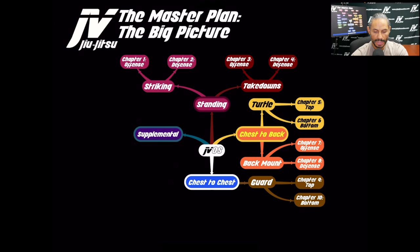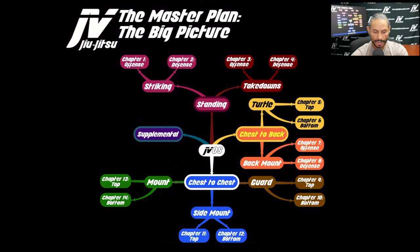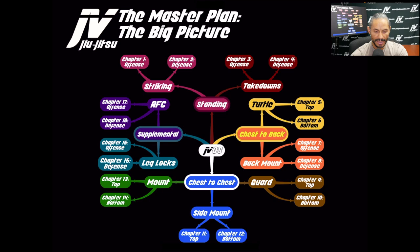The Guard Chapters: Chapter 9 is Guard Top and Chapter 10 is Guard Bottom. Side Mount Chapters: Chapter 11 is Side Mount Top and Chapter 12 is Side Mount Bottom. The Mount Chapters: Chapter 13 is Mount Top and Chapter 14 is Mount Bottom. The Supplemental Chapters: Chapter 15 is Leg Lock Offense, Chapter 16 is Leg Lock Defense, Chapter 17 is AFC Offense, and Chapter 18 is AFC Defense.